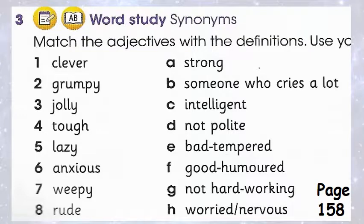Match the adjectives with the definitions. Number one: Intelligent. Number two: Grumpy, bad tempered.